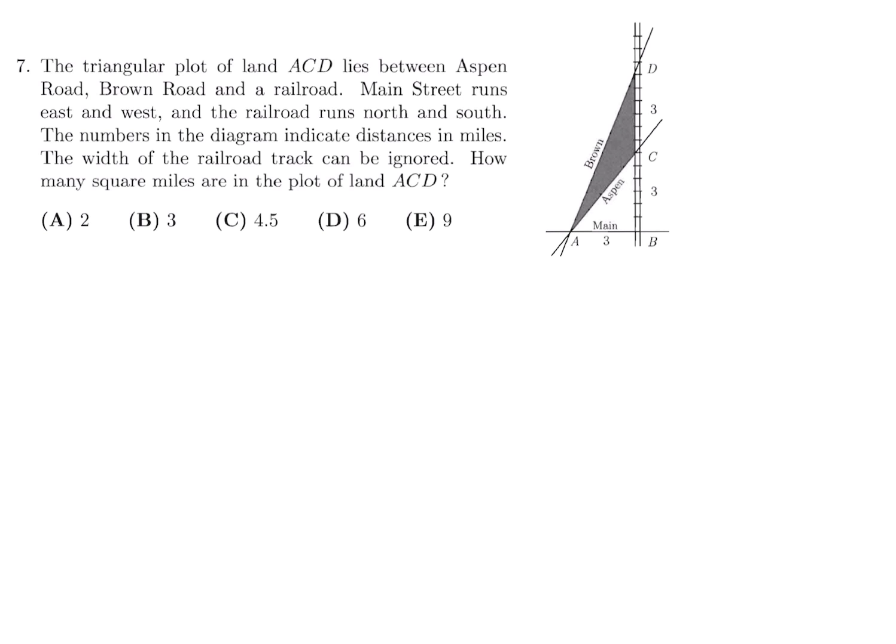The triangular plot of land ACD lies between Aspen Road, Brown Road, and a railroad. Main Street runs east and west, and the railroad runs north-south. The numbers in the diagram indicate distance in miles. The width of the railroad track can be ignored. How many square miles are in the plot of land ACD? So ACD can be calculated as the difference of those two triangles. The first one being the big one, and from that one, subtract this triangle. So the first one is 1 half base times height, which is 3 times 6. And then this one here that we have to subtract is 1 half base, which is 3, times height, which is 3. So this basically becomes 9 minus 4.5, and that is equal to 4.5. So at number 7, the answer is C.